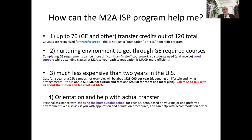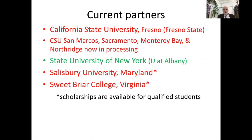We will provide orientation classes and help you with the actual transfer procedures. We'll help you choose the most suitable school based on your major and preference for environment. Current partners include California State University Fresno (Fresno State), Salisbury University in Maryland, and Sweet Briar College in Virginia. These last two have scholarships available for qualified students. Agreements in processing include Cal State San Marcos, Sacramento, Monterey Bay, and Northridge, as well as the State University of New York at Albany and the College of Staten Island in New York.